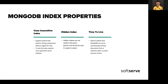And the last property is pretty interesting. It gives us the ability to remove indexes with the associated documents after the time specified in the time-to-live property. It's pretty helpful if you need to build storage for some temporary data like logs, user sessions, events, etc.